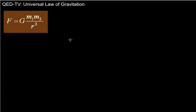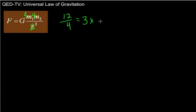Last question: what happens if you triple one mass, quadruple the other mass, and double the distance between them? On the numerator, 3 times 4 gives 12 times the force. But doubling the distance means 1 over 2 squared equals 1/4 of the force. So 12 times 1/4 equals 3 — you end up with 3 times the amount of force compared to the original.